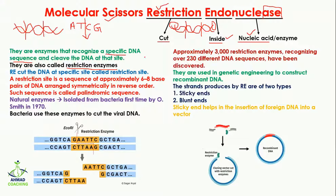They are also known as restriction enzymes. There are three terms for them: molecular scissors, restriction endonucleases, or restriction enzymes — if anyone uses any of these words, you can easily understand they are referring to the same thing. They are called molecular scissors because they cut the DNA just like a scissor, and they do it at a molecular level.